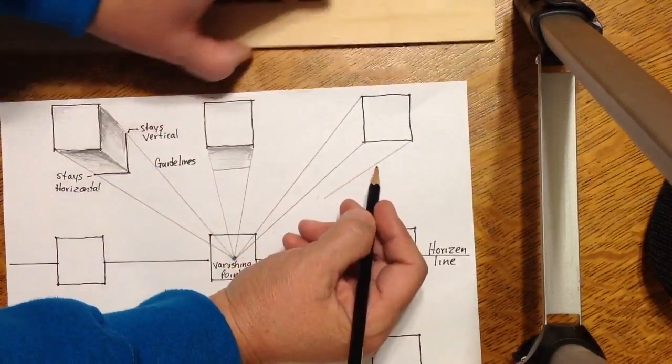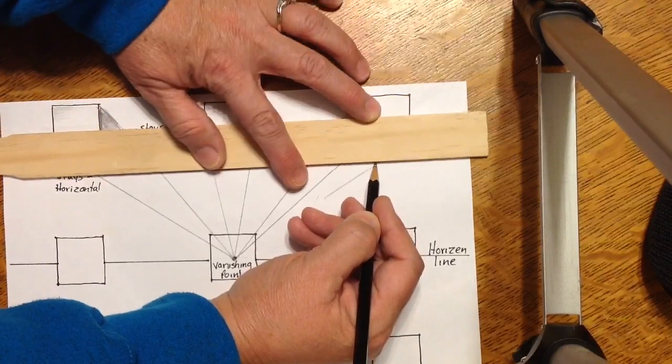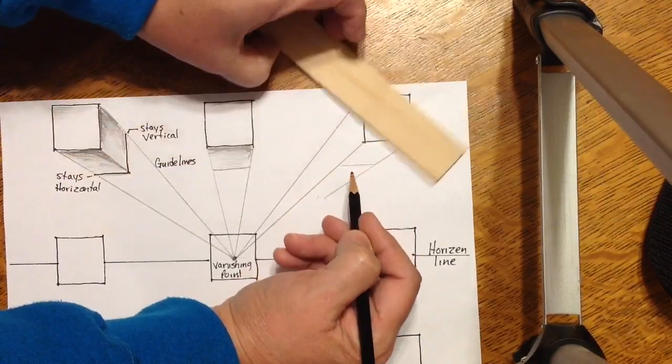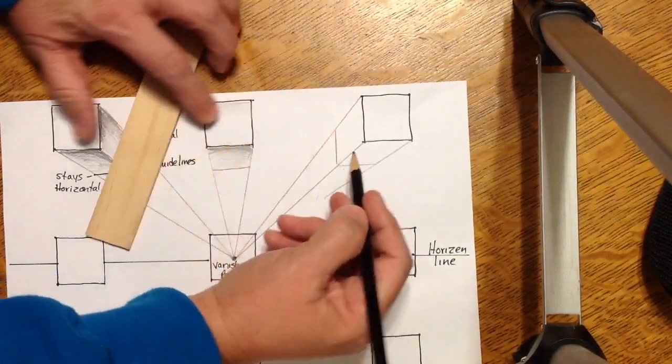And then when you end the box, it has to be horizontal at the bottom and vertical on the side. And then you'll shade that in.